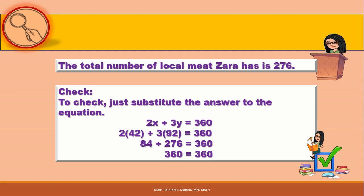To check, substitute the answers into the equation: 2X plus 3Y equals 360. We know X is 42 and Y is 92. 2 times 42 is 84, and 3 times 92 is 276. Adding them together: 360 equals 360. Since the value of the left side equals the value of the right side, the answer is correct.